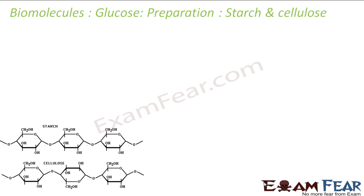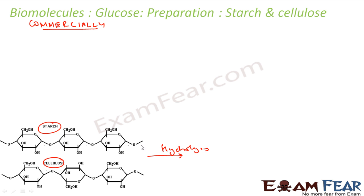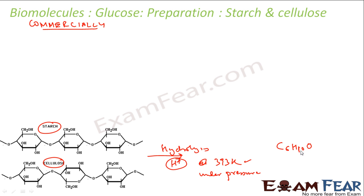The next method is preparation of glucose from starch or cellulose. This is the commercially preferred method. Starch or cellulose is boiled with sulfuric acid or hydrochloric acid at approximately 393 Kelvin under high pressure. The product obtained is C6H12O6, which is glucose.